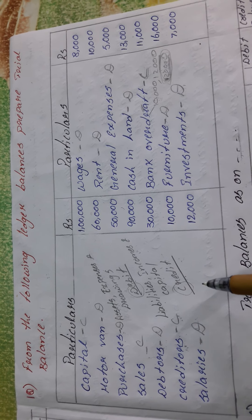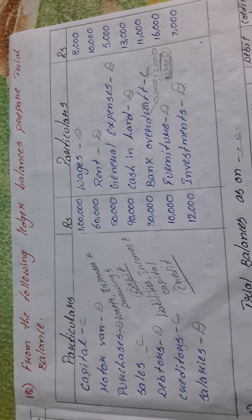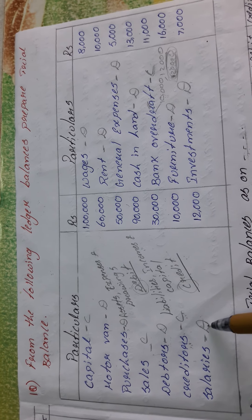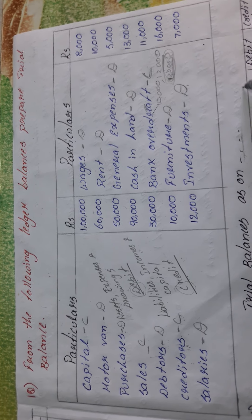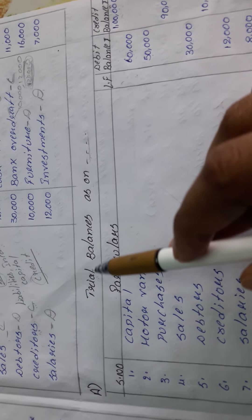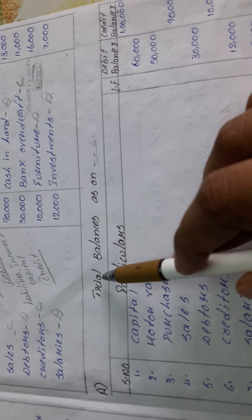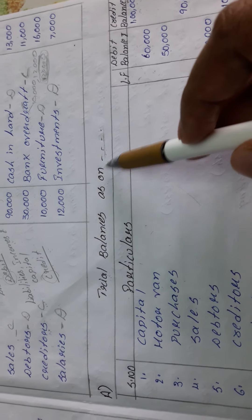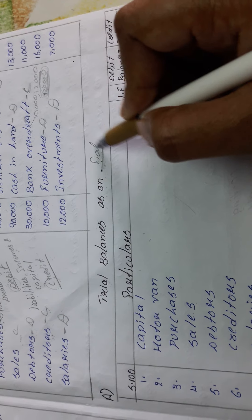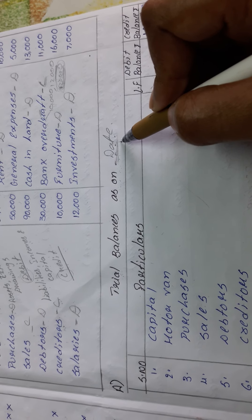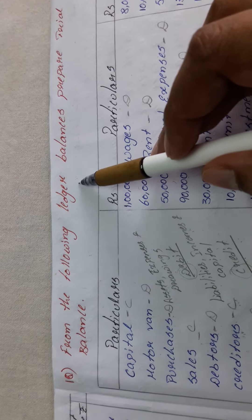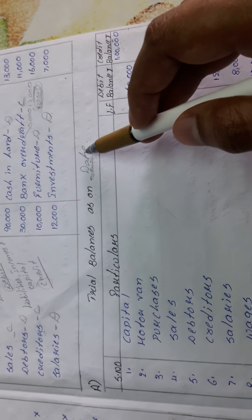Now we know how the problem works and how the trial balance format looks. We draw the format and post what is debited to the debit amount column and what is credited to the credit side. Before writing the format, you must always write 'Trial Balance as on' — this is important. For the date: if a date is given in the question, write that date; if no date is given, leave it blank. In this question no date was given, so no date is written.